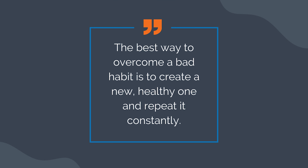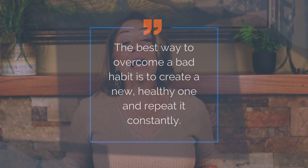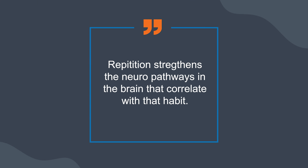The best way to overcome a bad habit is to create a new one and repeat the new habit over and over again so that it creates new neural pathways in your brain. If you find that you're bad at communication, or that things seem to slip through the cracks or there are misunderstandings, the only way to get better is to practice clear intentional communication repeatedly. Repetition strengthens the neural pathways in the brain that correlate with that habit.